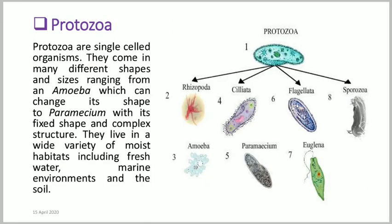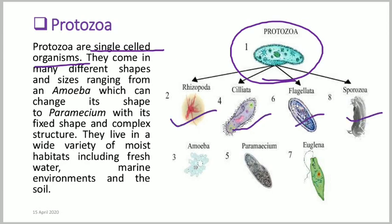Protozoa are single-celled organisms that can live in any environment. They can range in different sizes. They can also change their shape — from simple amoeba to the more complex paramecium. Because they can change their shape, they can live inside almost anywhere.